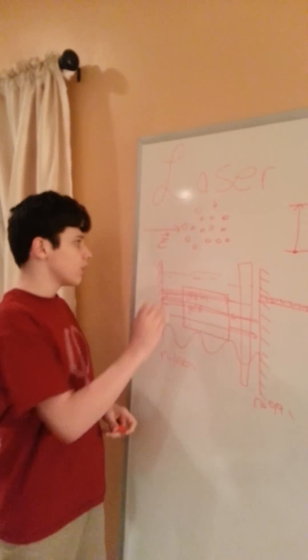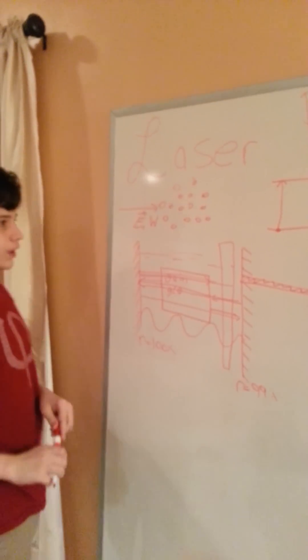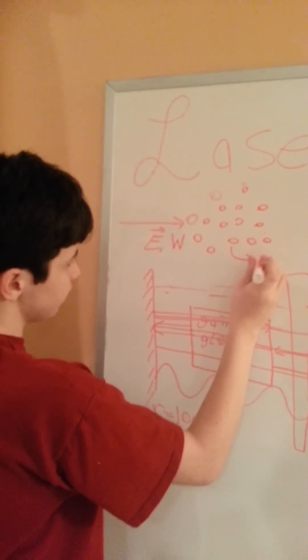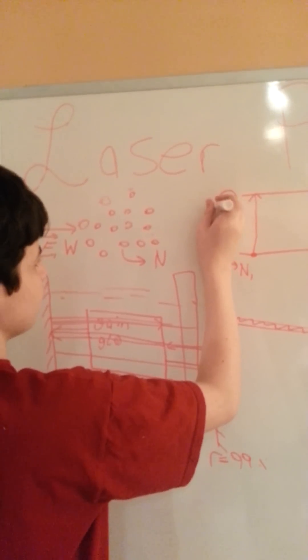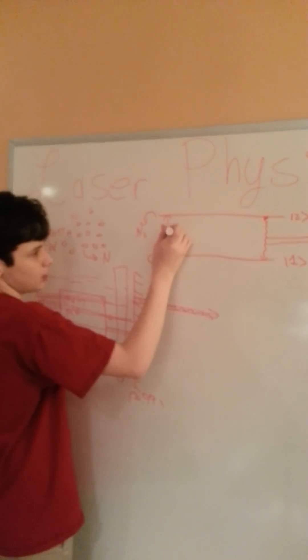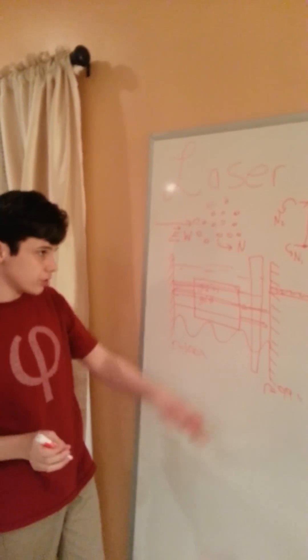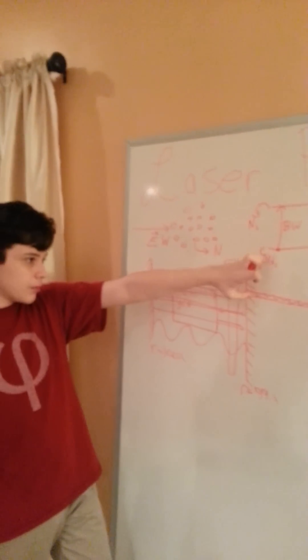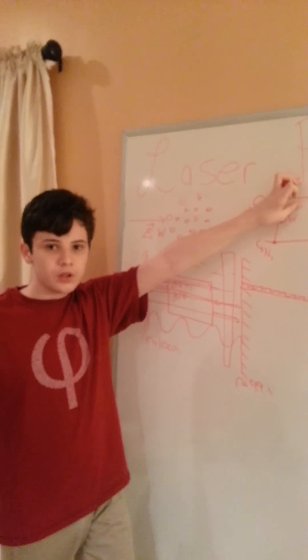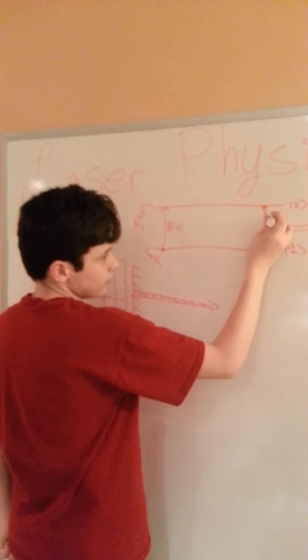Here we have field E and energy W. Let's call the total number of atoms N. Let's say this one has N1 atoms in it, and this is N2. The amount that goes up is going to be a constant called BW, a constant B called the Einstein B coefficient, times W, where W is that energy I was mentioning. If I have more energy, I'm going to have more atoms go from 1 to 2. If I have more energy, it's going to go up faster.